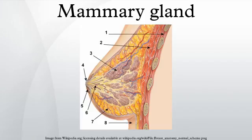The basic components of a mature mammary gland are the alveoli, lined with milk-secreting cuboidal cells and surrounded by myepithelial cells. These alveoli join to form groups known as lobules. Each lobule has a lactiferous duct that drains into openings in the nipple.